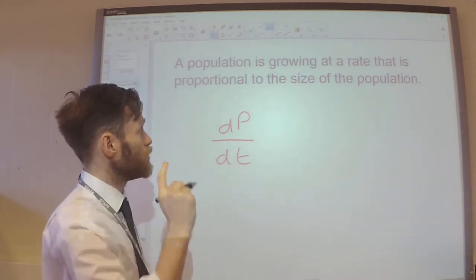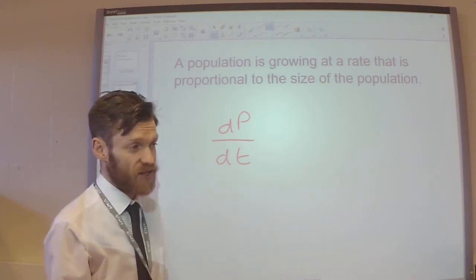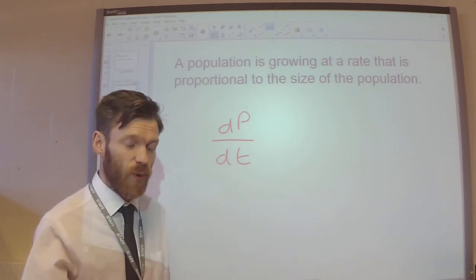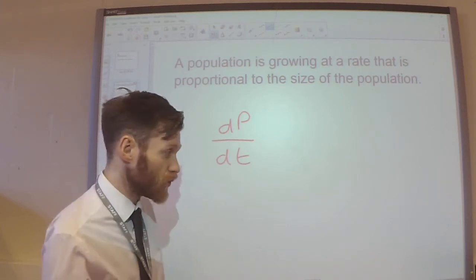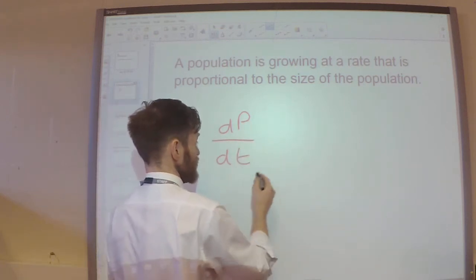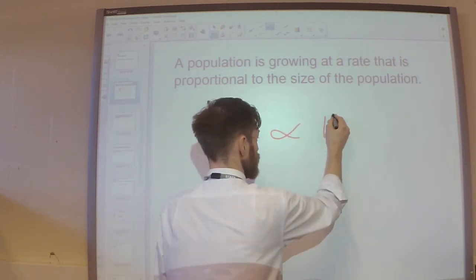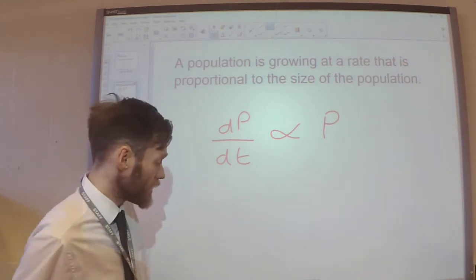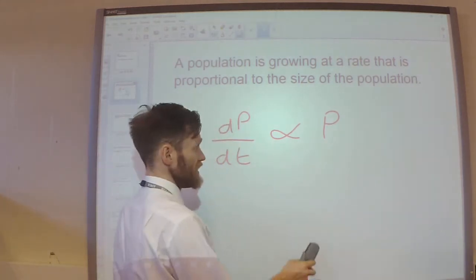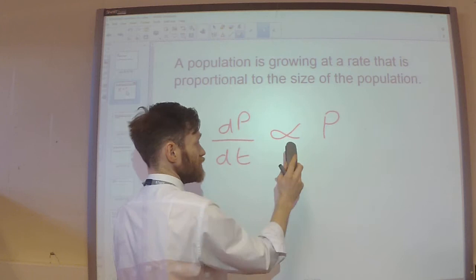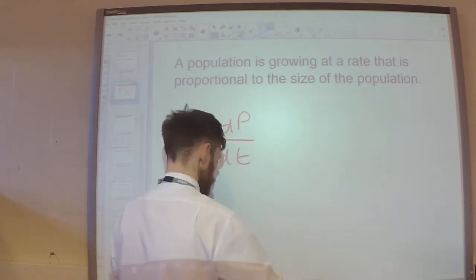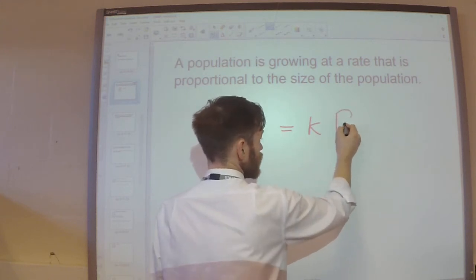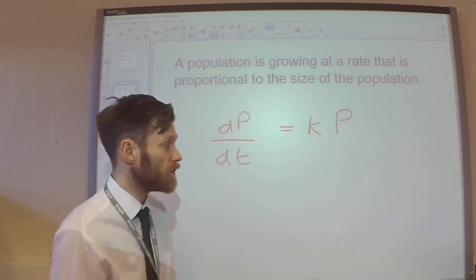That is proportional to the size of the population. Now, depending on how you've been taught what proportion when you were in the lower school, you might say dP by dt is proportional to the population. And then you would say, well, I can replace the proportion with an equals k, a constant, multiplied by the population.